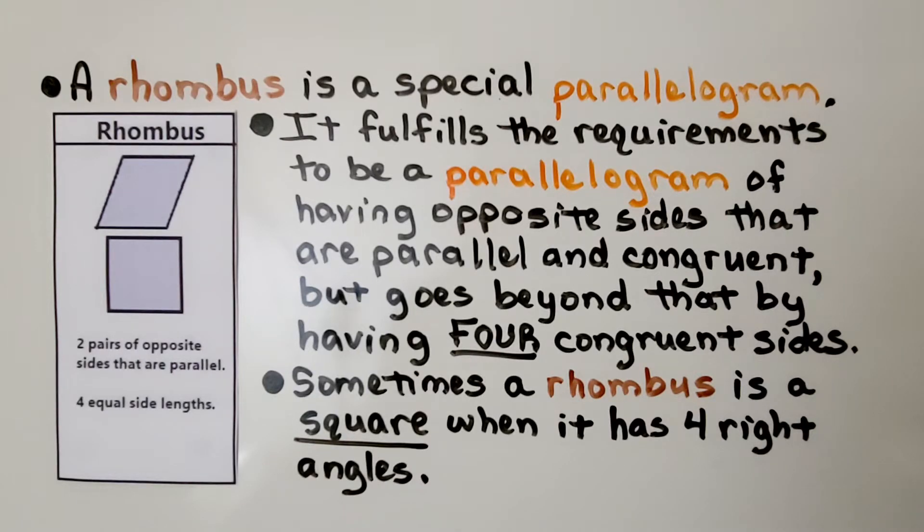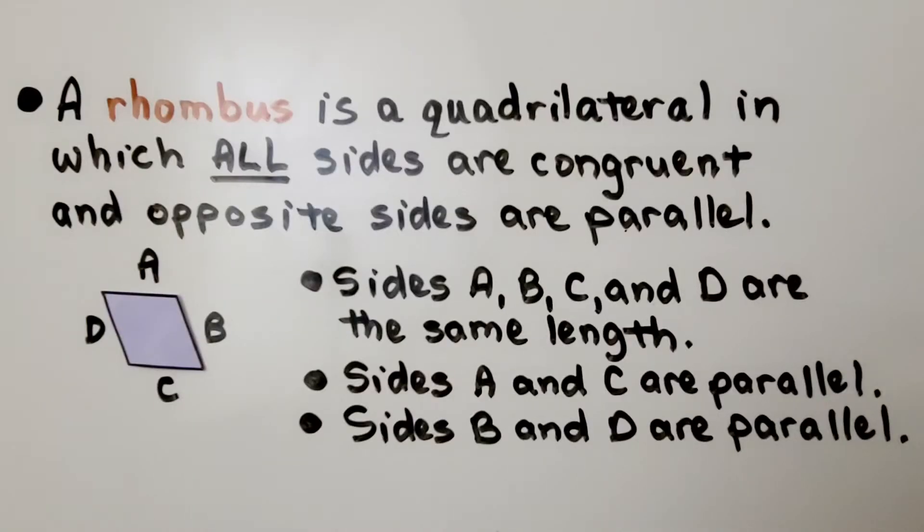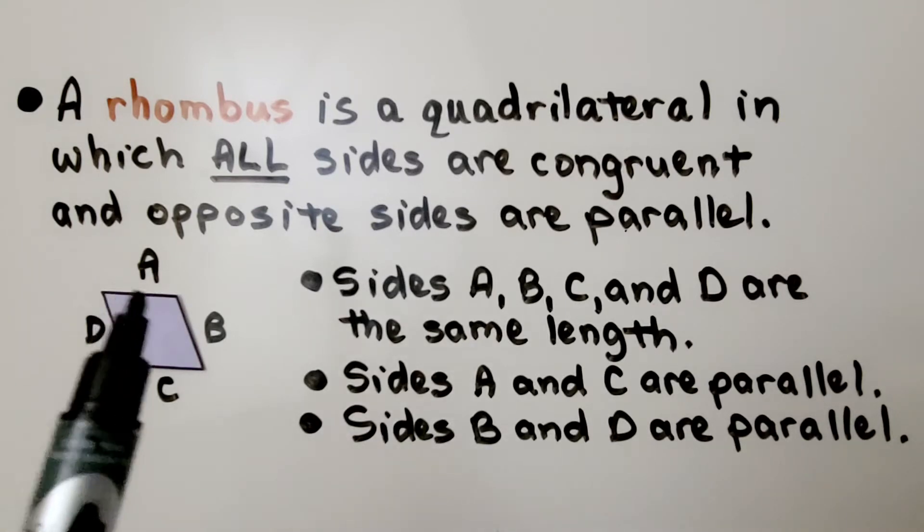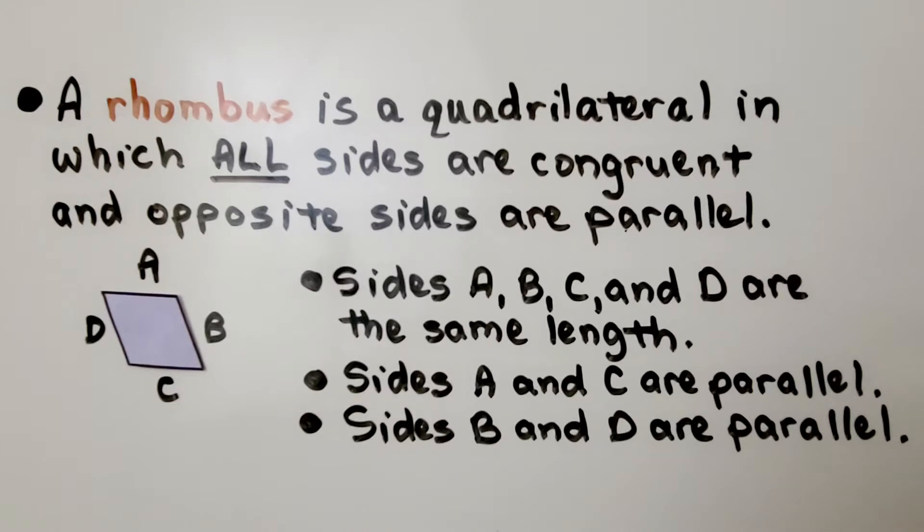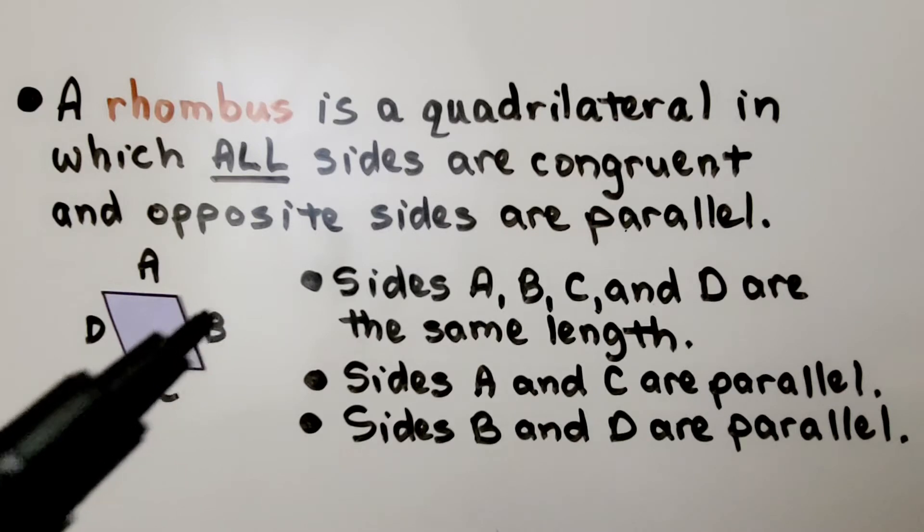Sometimes a rhombus is a square when it has four right angles. A rhombus is a quadrilateral in which all sides are congruent—that means that the lengths of the sides are equal and opposite sides are parallel. Sides A, B, C, and D are all the same length. Sides A and C are parallel, sides B and D are parallel.